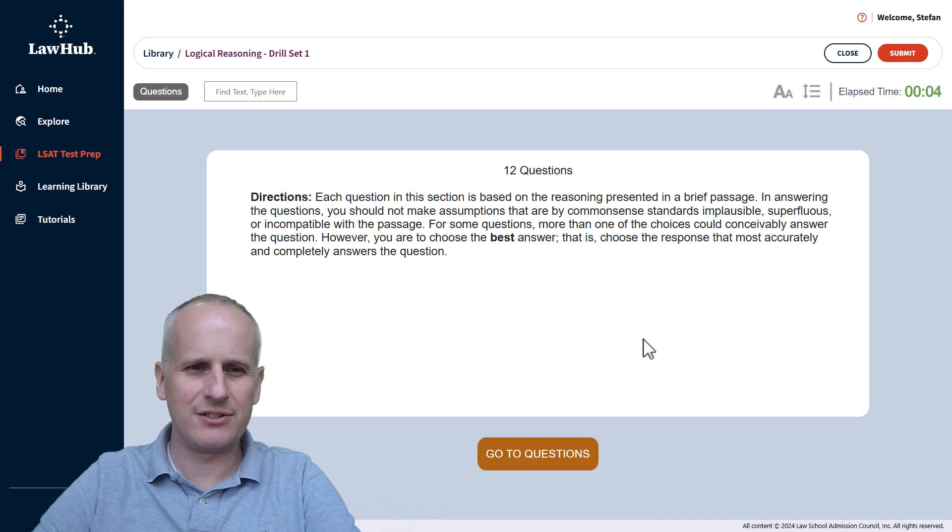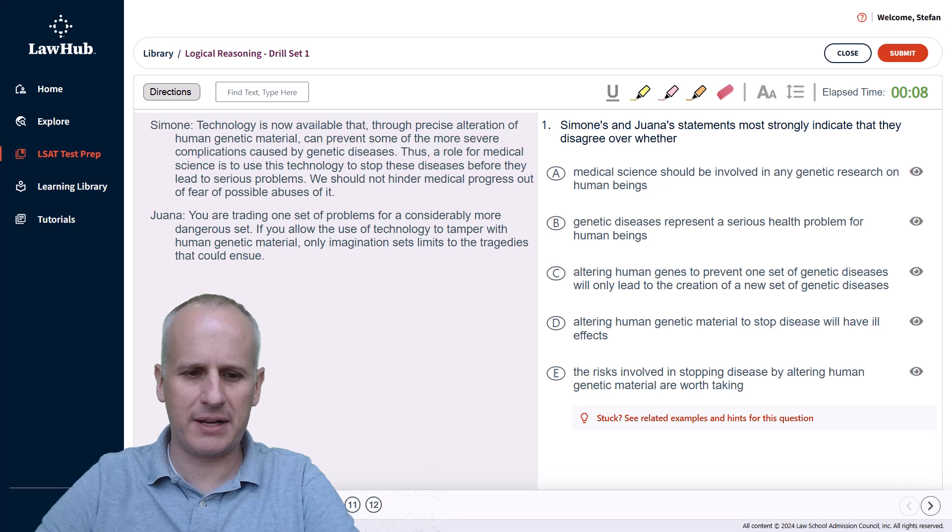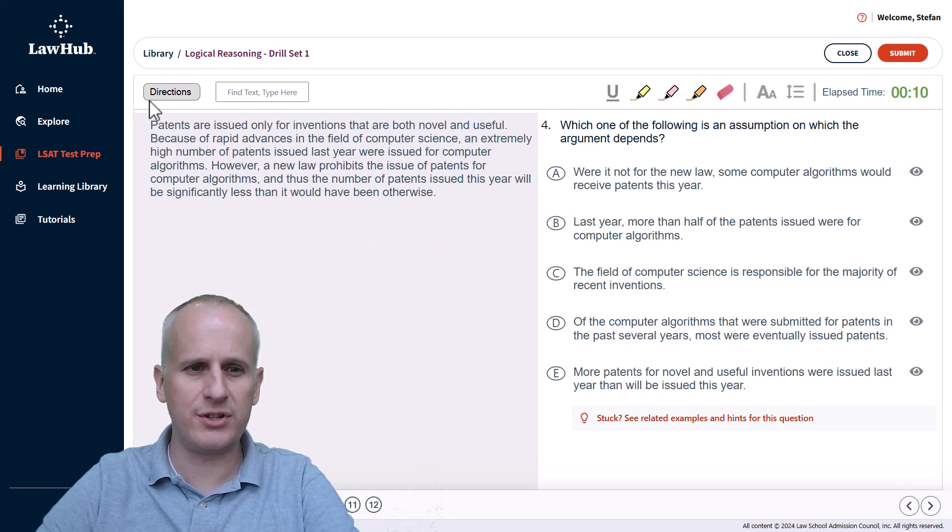Here we are once again in logical reasoning drill set number one. We're going to go straight to the questions and pick up question four, which is one of the most common logical reasoning question types that you can encounter on the exam, which is something asking for an assumption on which the argument depends.